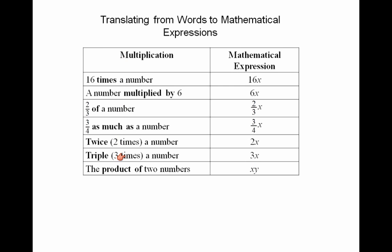This would be the list of the phrases for multiplication. For instance, 16 times a number would be like 16 times x. Two-thirds of a number means two-thirds times x. Of means multiply. So all are different ways to represent multiplication.